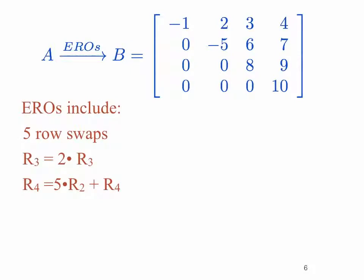Suppose we did five row swaps, we multiplied row three by two to get the new row three, and row four was replaced by five times row two plus row four. Recall that every row swap multiplies the determinant by -1; multiplying a row by a scalar multiplies the determinant by that scalar; and adding a multiple of one row to another has absolutely no effect on the determinant.